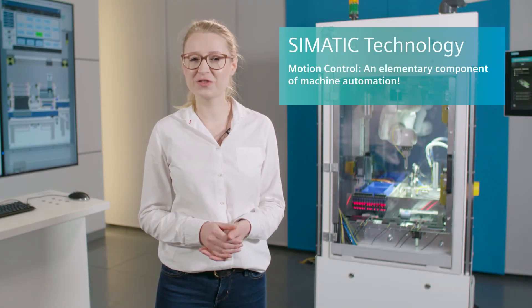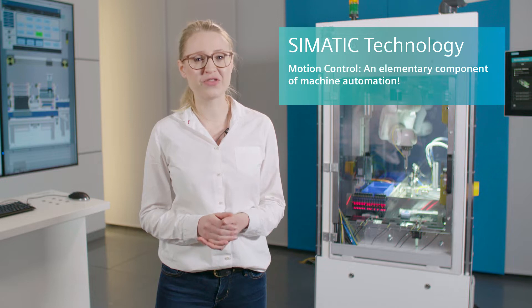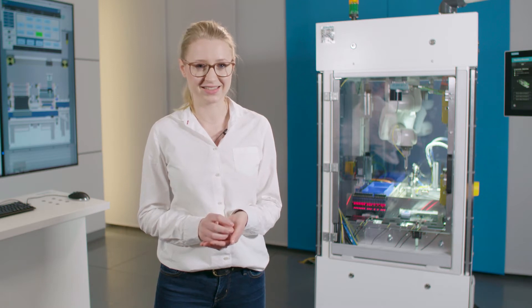Keep the world in motion. 150 years ago, our company founder Werner von Siemens laid the foundation for today's motion control business when he invented the Dynamo machine for flexible generation of electricity in 1866.